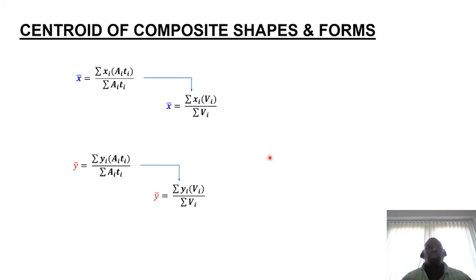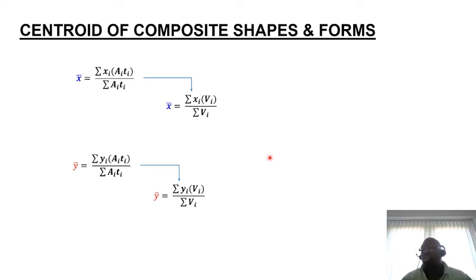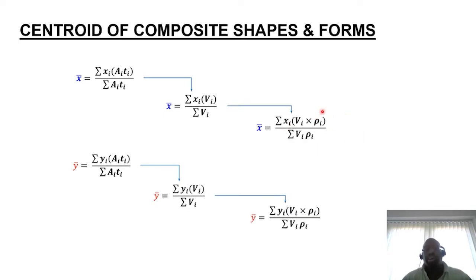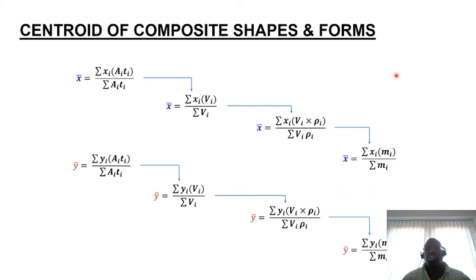If we think about the formula for density: density equals mass divided by volume. Transposing this, mass equals volume multiplied by density. So if an assembly is constituted of parts made from different materials, by multiplying the numerator and denominator by the density of each specific component, we can define the equation to calculate the centre of mass accounting for the different materials.